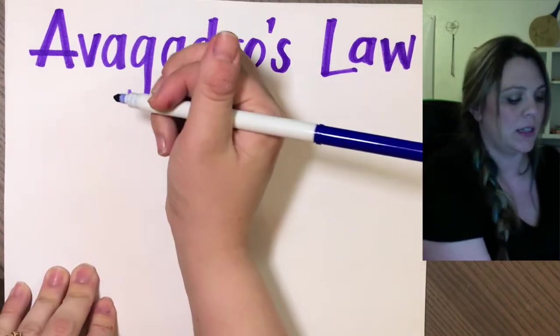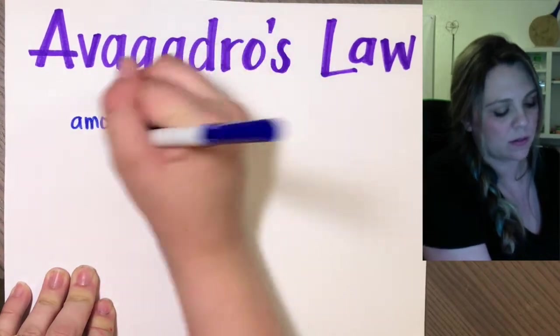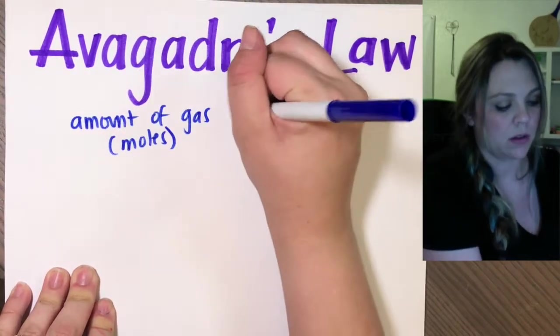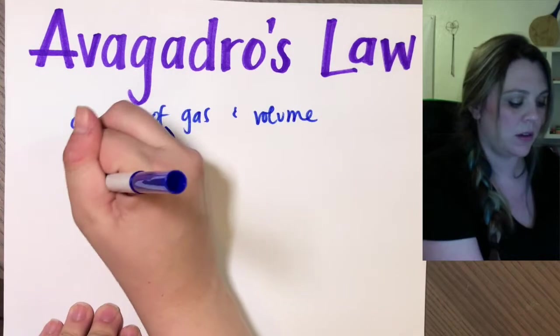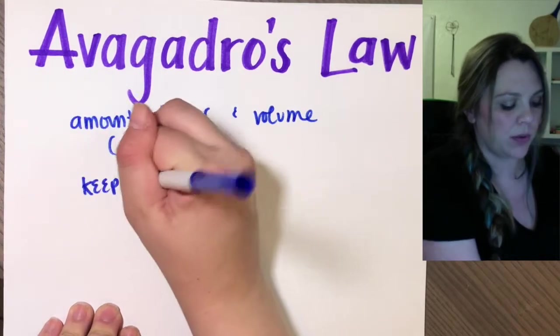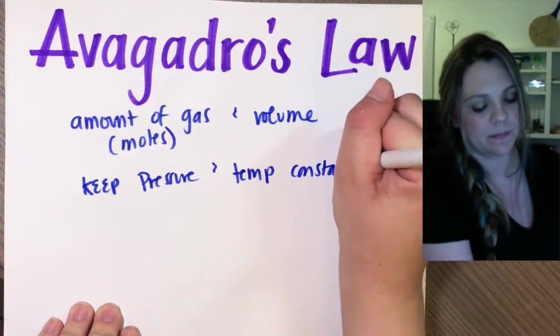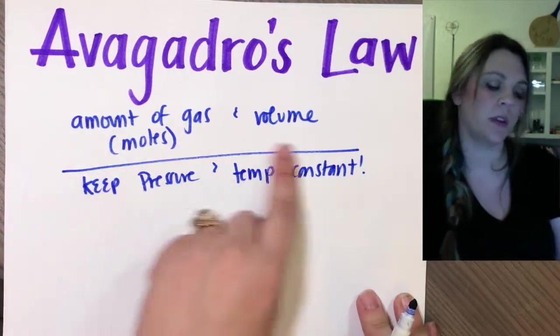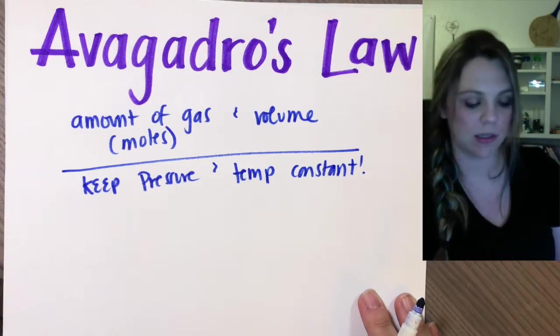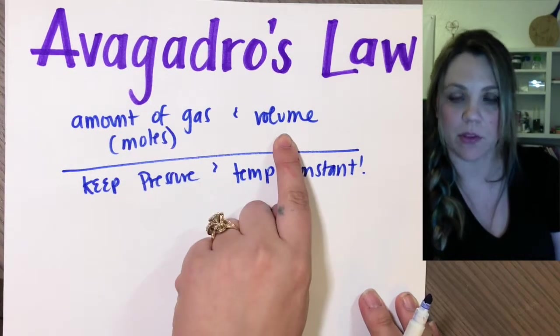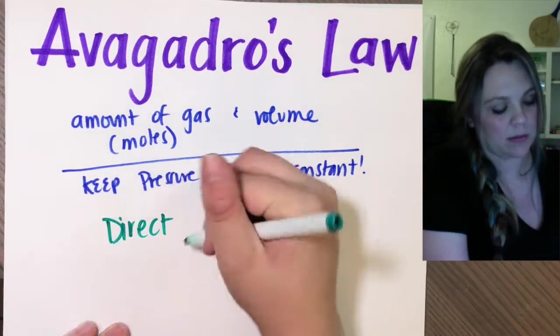Avogadro's law is dealing with your amount of gas, which is always going to be in moles, and your volume. We're seeing how these two variables affect one another. You keep pressure and temp constant. So I'm dealing with my number of moles, my amount, and my volume, and I'm keeping everything else constant. The amount and the volume are directly proportional, so again we have a direct relationship.